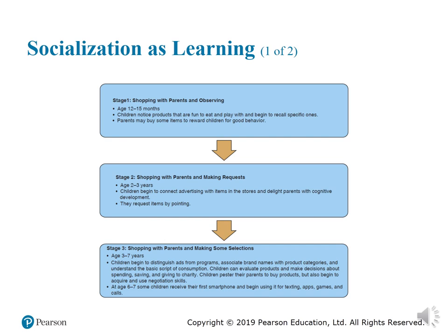Stage three, age three to seven years: shopping with parents and making some selections. Children begin to distinguish ads from programs, associate brand names with product categories, and understand the basic script of consumption. Children can evaluate products and make decisions about spending, saving, and giving to charity. Children prefer their parents to buy products but also begin to acquire and use negotiation skills to convince their parents. At age six to seven, some children receive their first smartphone and begin using it for texting, games, and making calls.